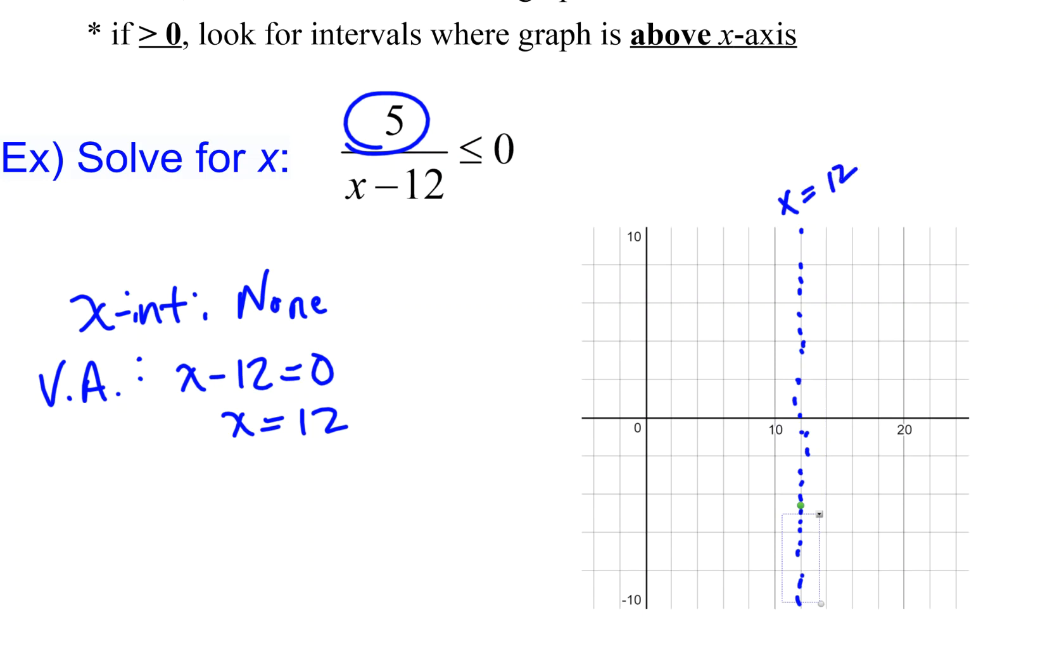Then I have to determine, on either side of that vertical asymptote, is this function going to be positive or negative? I know it's never going to equal zero, but I don't know if it's positive or negative. I can find that by doing a quick test point. Let's take x equals 10. If x equals 10, then I have 5 over 10 minus 12, or 5 over negative 2, which is negative 2.5.